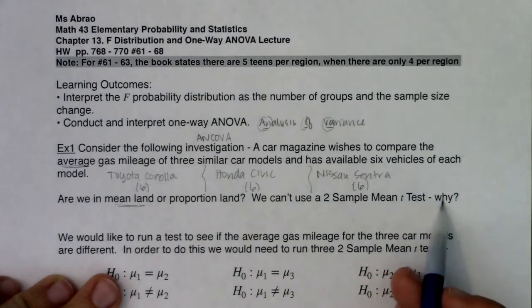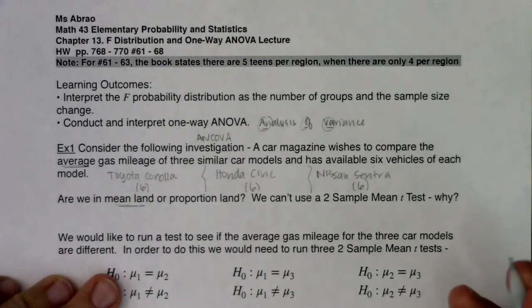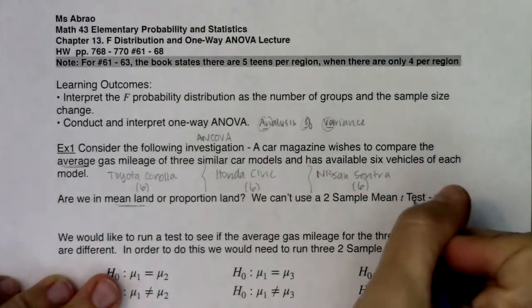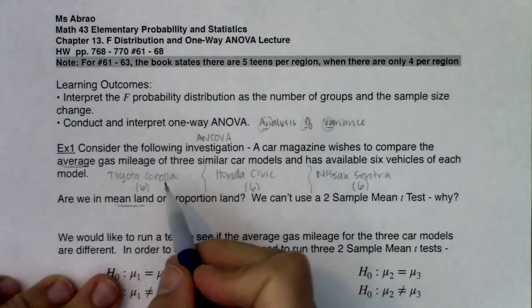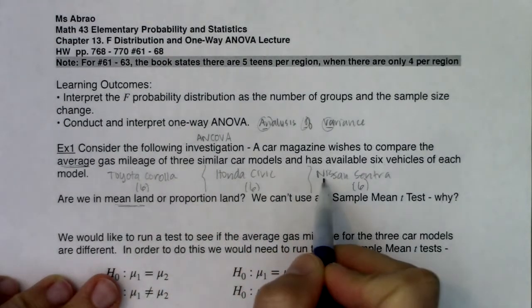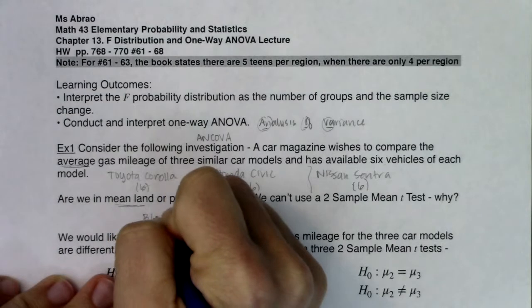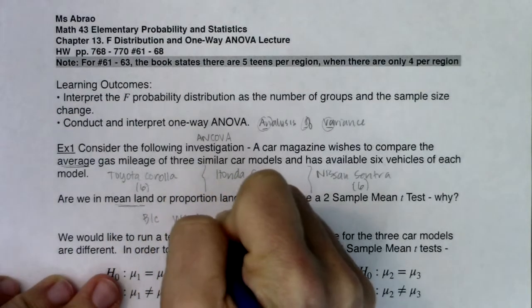Now we can't use a two-sample mean t-test. Why? Well, we can't use a two-sample mean t-test because we have three groups. So I can't use two-sample mean t when I have three different averages we want to compare. So I'll put here because we have three groups.